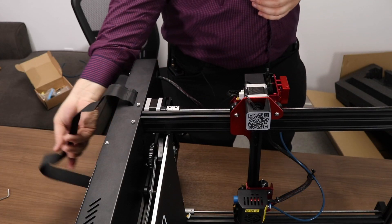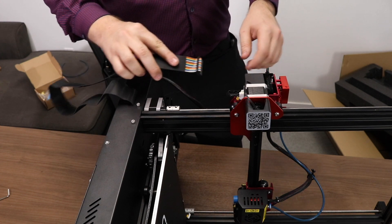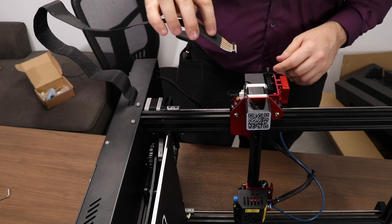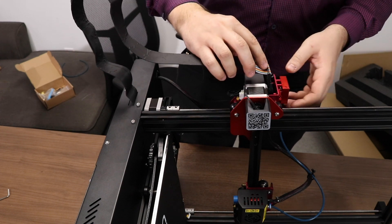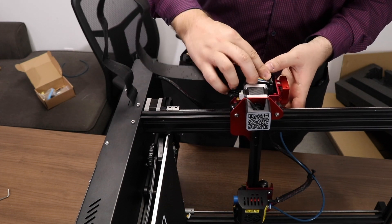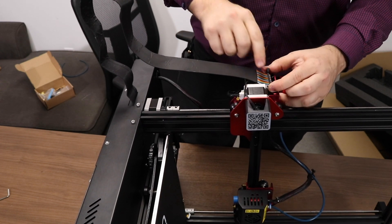The CR-10S Pro comes with a very neat and tidy cable assembly that plugs into the side of the X-axis gantry. Ensure that your cable isn't kinked or twisted and then insert it into the plug, pressing firmly. After pressing it in, make sure you squeeze the two clips on either side to hold it in place.